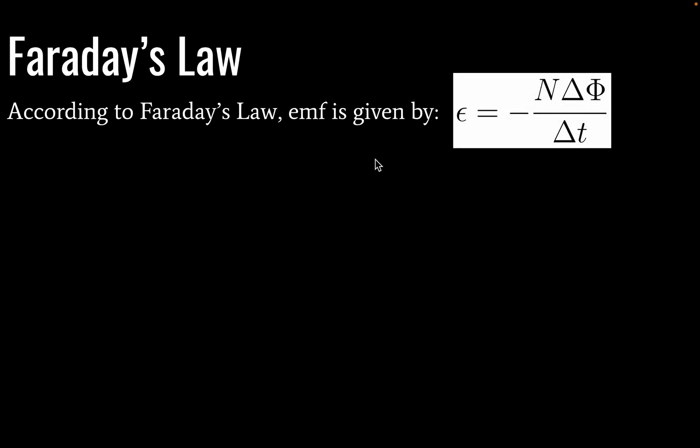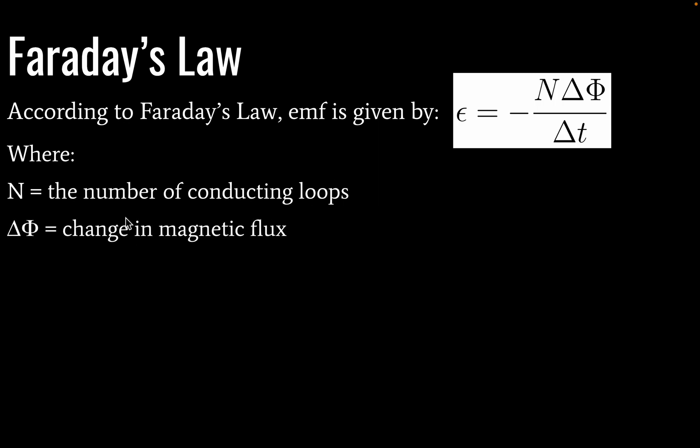So our EMF is therefore given by epsilon. And this will be equal to negative N times a change in magnetic flux divided by a change in time. And you might recognize that there is some calculus occurring here. You don't need to know the calculus. So N is equal to the number of conducting loops. Change in phi is equal to a change in magnetic flux. Delta T is equal to a change in time. The little delta there always tells us we have a change.